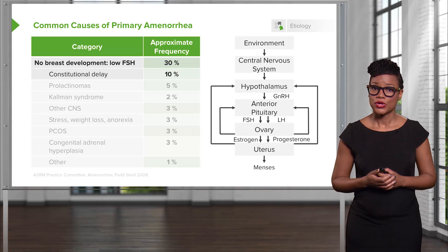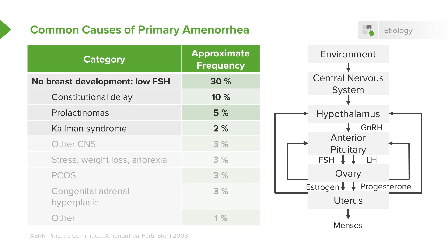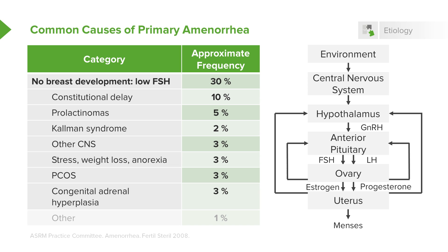A low FSH is typically seen with constitutional delay, prolactinomas, and Kallmann syndrome. Patients with Kallmann syndrome usually have anosmia — meaning they cannot smell — and primary amenorrhea, and will need assistance to become pregnant. Other CNS pathology can also lead to a low FSH. Stress, weight loss, and anorexia are typically associated with a low FSH. Polycystic ovarian syndrome can also present with a normal to low FSH, and congenital adrenal hyperplasia may have a low FSH as well — a separate lecture covers CAH in more detail.